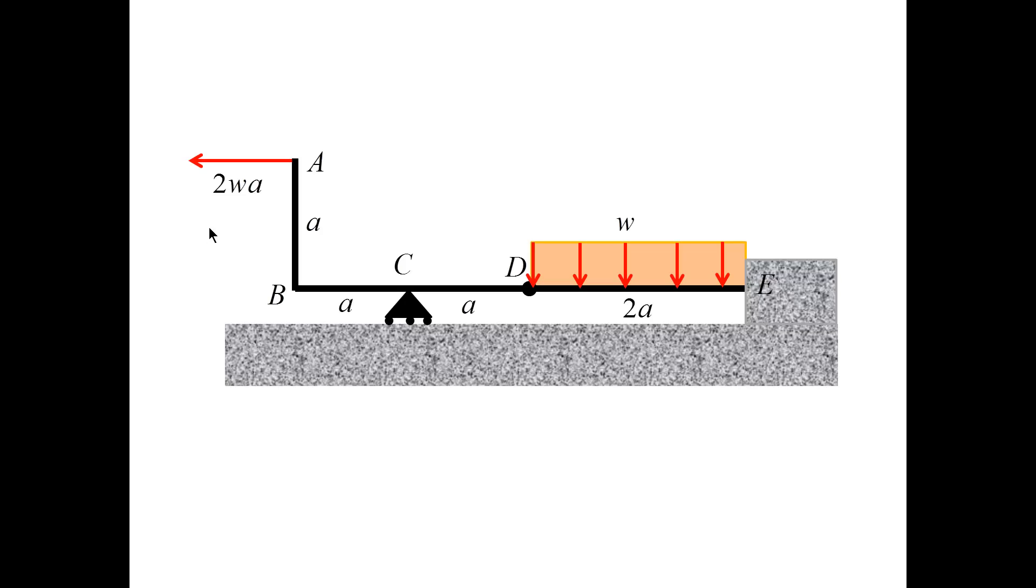What makes this problem different from other problems is that first it involves an L-shape, then it involves a horizontal force, so we will have normal internal forces, or we will have tension or compression in the members, and we have a hinge.